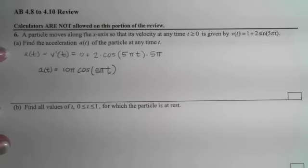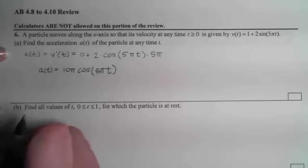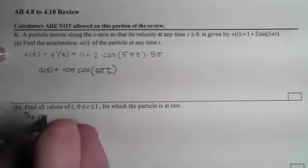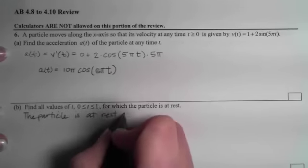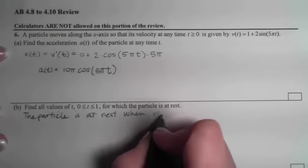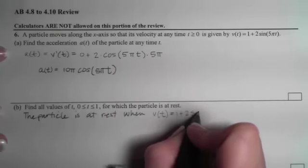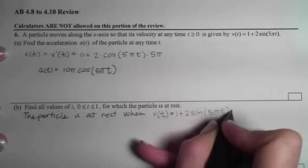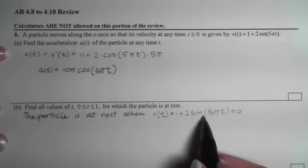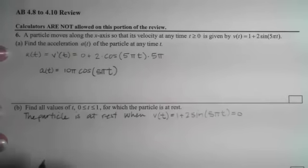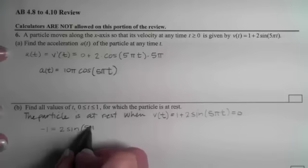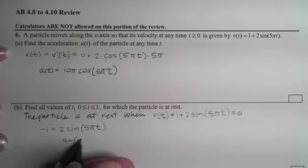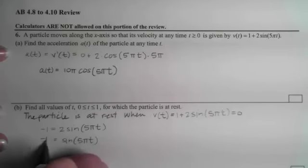Part B asks for all the values for which the particle is at rest. The particle is at rest when the velocity is zero, so we're solving for when 1 + 2sin(5πt) = 0. We have -1 = 2sin(5πt) and sine of 5πt equals negative one half.